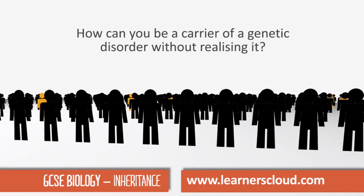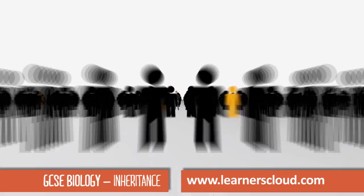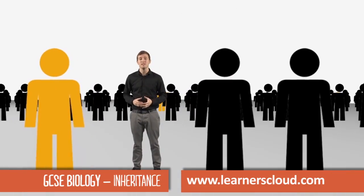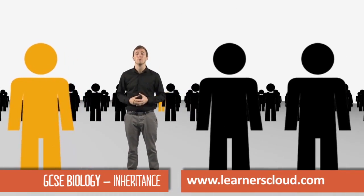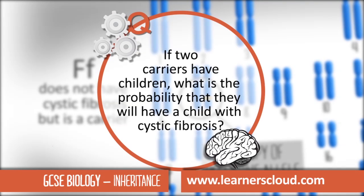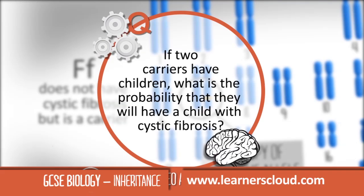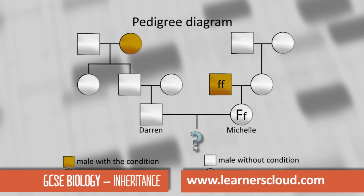How could you be a carrier without even realising it? These are the types of questions we'll be looking at in this clip. If two carriers have children, what is the probability that they will have a child with cystic fibrosis? Meaning that he had two copies of the recessive allele, one of which she inherited.